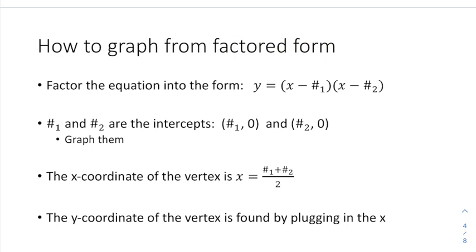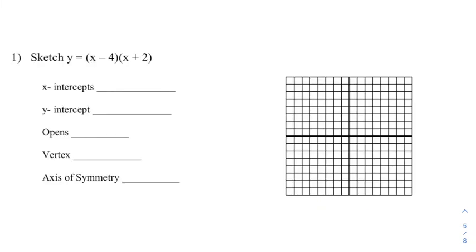If your quadratic is written in the form y = (x ± a number)(x ± another number), you can easily solve the equation 0 equals that factored form, and those solutions can be used as the x-intercepts of your graph. There's going to be an easy trick to determine the x-coordinate of your vertex once you have some x-intercepts, and from there we can start applying some of the things we learned in the first lesson of this unit. Let's take a look at an example.